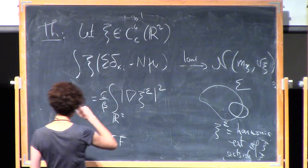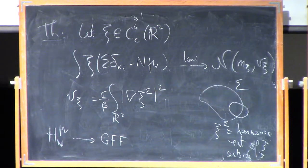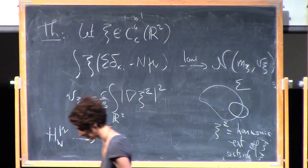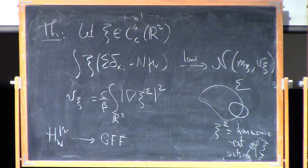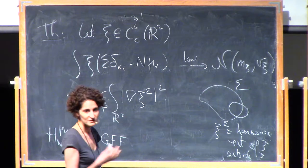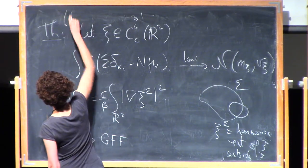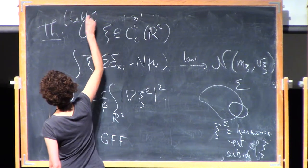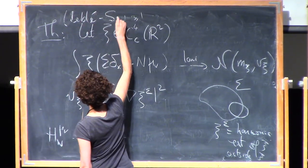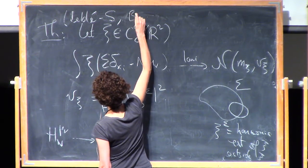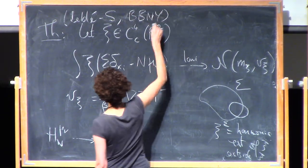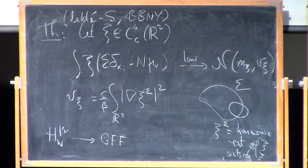So this theorem in 2D was first proved by Rider-Virag in the Ginibre ensemble case when v is quadratic, and by Ameur and Denmal Makarov for beta equals 2, which is the determinantal case for which you have other methods of computing. This is for any beta. This theorem was proved at the same time by Thomas Leblé and myself and also by the team of Bauer-Schmidt-Bourgade, Nicolas and Yao — with slight differences, but essentially the same.